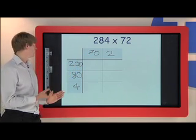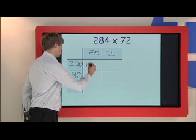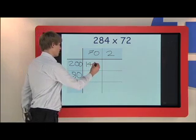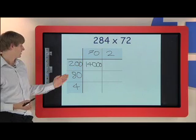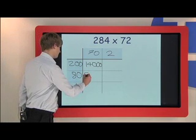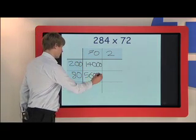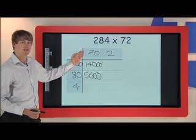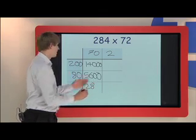So we have 200 times 70, and to work that out we do 2 times 7 to give us 14, and then we have 1, 2, 3 zeros, we add those in like so to give us 14,000. 70 times 80, we do the 7 times the 8 to give us 56. And then we have 0 and 0 again, 2 zeros, put those at the end. And then the next box is 70 times 4, 7 times 4 is 28, and then don't forget the 0.